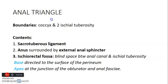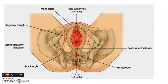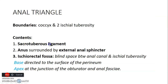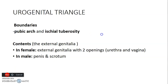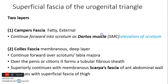The anal triangle is bordered by the coccyx and the two ischial tuberosities, and contains the sacrotuberous ligaments, the anal canal surrounded by the external anal sphincter, and the ischioanal fossa whose base is directed on the surface of the perineum and the apex at the junction between obturator and anal fascia. The urogenital triangle is bordered anteriorly by the pubic arch and the two ischial tuberosities posteriorly. In females it contains the external genitalia and the openings of the urethra and vagina, while in males it contains the penis and the scrotum.